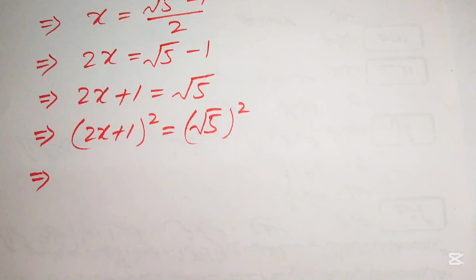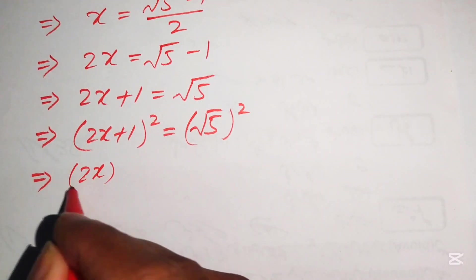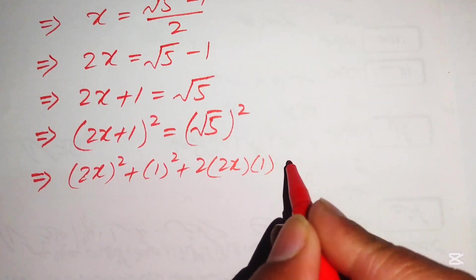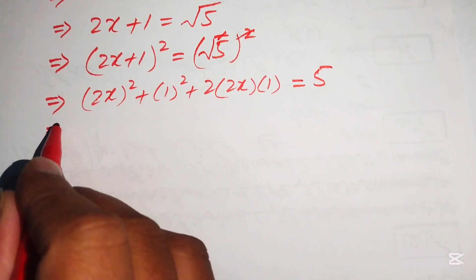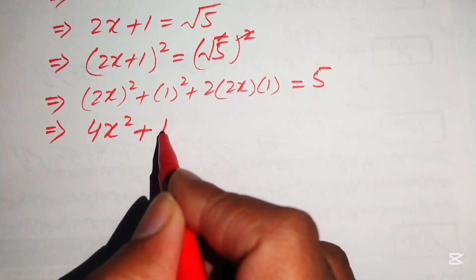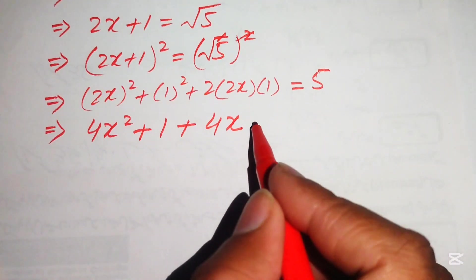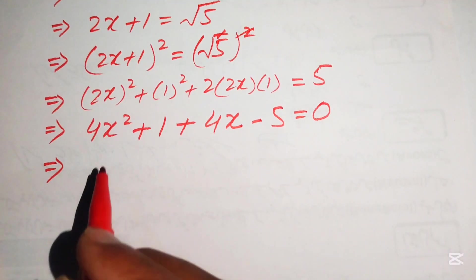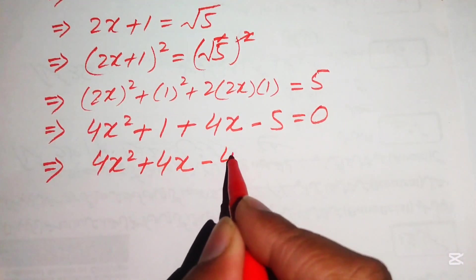We apply the square identity (a + b)² = a² + 2ab + b² on the left-hand side. This gives (2x)² + 2·(2x)·1 + 1² equals 5, since the square and square root cancel on the right. Expanding: 4x² plus 1 plus 4x equals 5. Moving 5 to the left-hand side gives 4x² plus 4x plus 1 minus 5 equals 0.